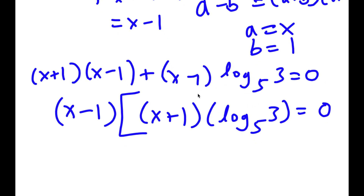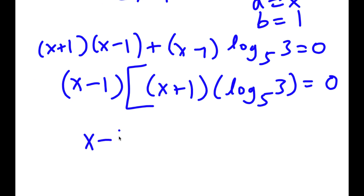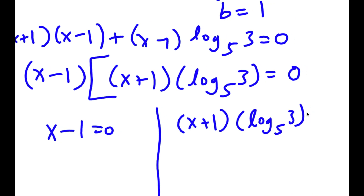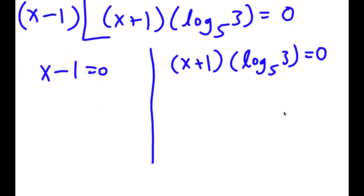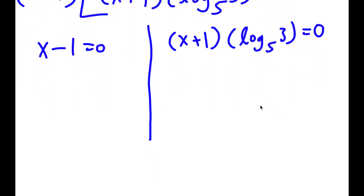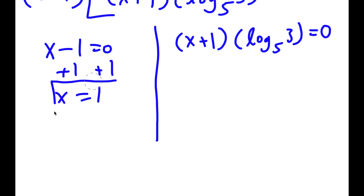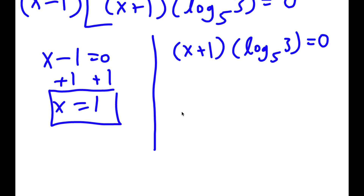Now this gives me two equations. I have x minus 1 is equal to 0, and I also have x plus 1 times log base 5 of 3 is equal to 0. For x minus 1 equals 0, I can simply add 1 on both sides, so I get x is equal to 1. And this is one solution of x.